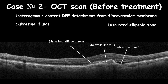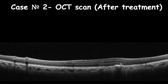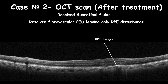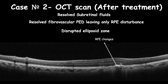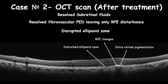Diagnosis is wet AMD with occult choroidal neovascularization. This patient was managed with monthly intravitreal aflibercept for three consecutive injections. One-month post-treatment OCT cross-section shows resolving of both subretinal fluid and fibrovascular PED, leaving RPE changes and improved vision to 20/50, limited only by disturbance of the ellipsoid zone. The patient was followed up using a PRN protocol.